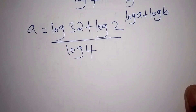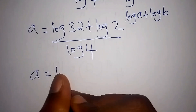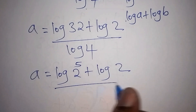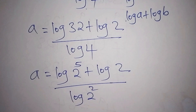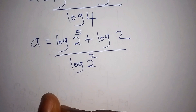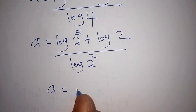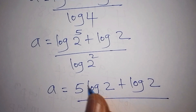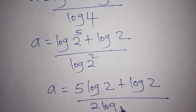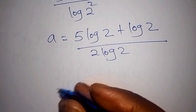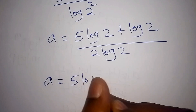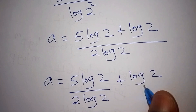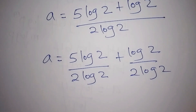Now, 32 is 2 to the power of 5, so log of 32 becomes 5 log 2. And 4 is 2 to the power of 2, so log of 4 becomes 2 log 2. So we now have: a equals 5 log 2 plus log 2, all over 2 log 2.